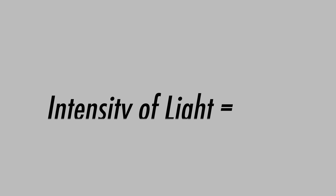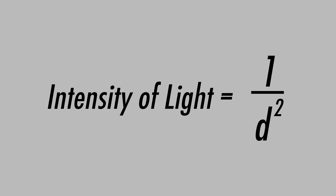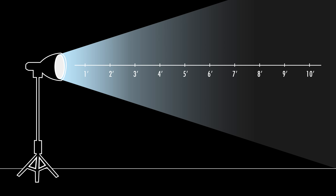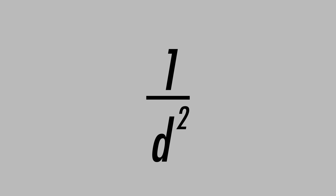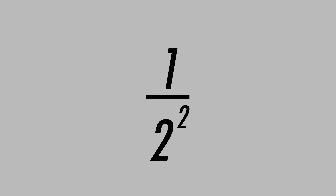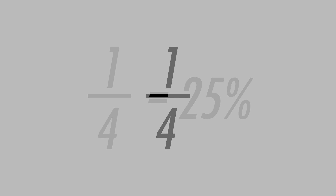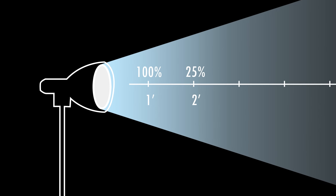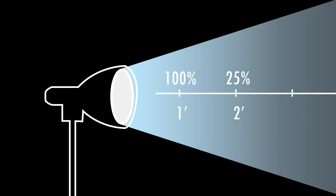The inverse square law states that the intensity of light is equal to one over the distance squared. Here we have our light source and we'll place a mark every 12 inches away from it till we reach 10 feet. Starting at one foot away, the distance is one foot, so one squared is one, and one over one equals 100%. At one foot away you get 100% of the light hitting your subject. Now watch what happens when we move two feet away: two squared is four, and one fourth equals 25%. We lose 75% of our light just by moving two feet away, or doubling the distance.